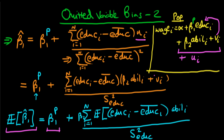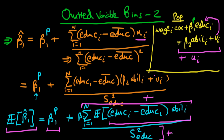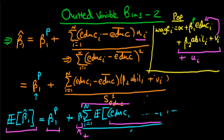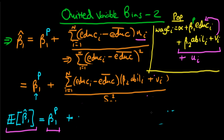So the expectation of beta_1_hat equals the true population parameter plus beta_2 times a second term. We know that an individual's level of education is likely positively correlated with their level of innate ability, so that second term is really just the correlation between education and innate ability. The numerator is positive and the denominator (the sample variance) is positive, so the entire second term is positive.